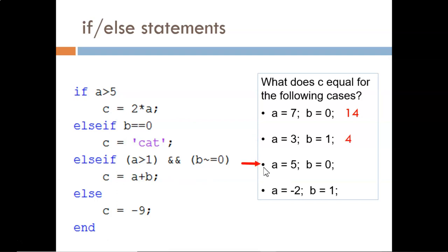For the third set of values, we see that the first condition is false. 5 is not greater than 5. But the second condition is true, so c takes on the value cat.